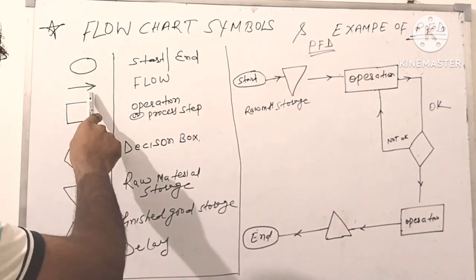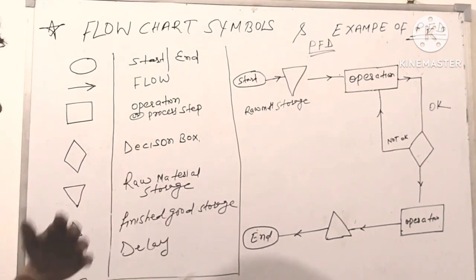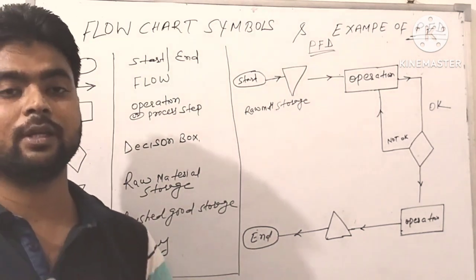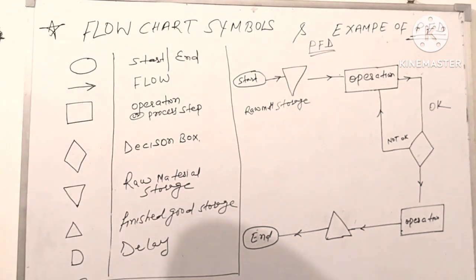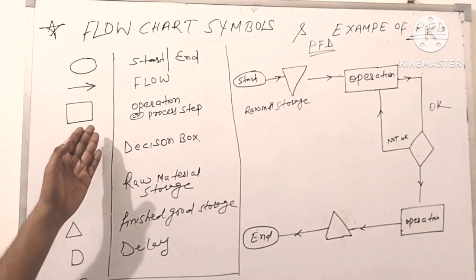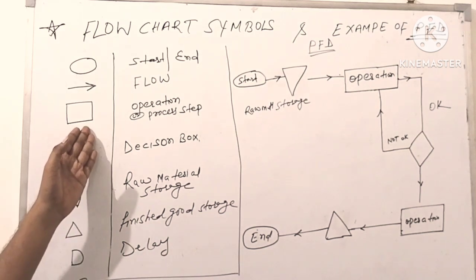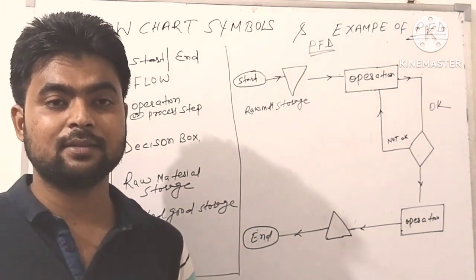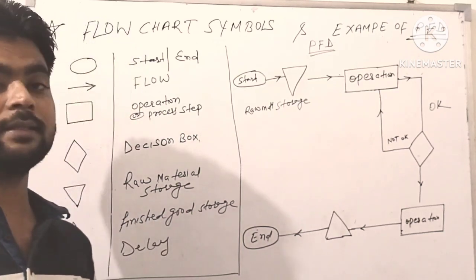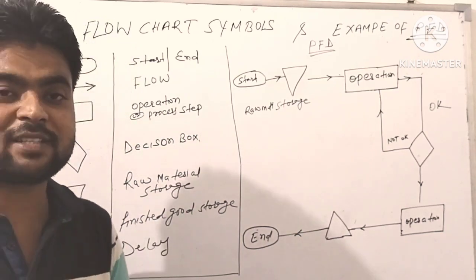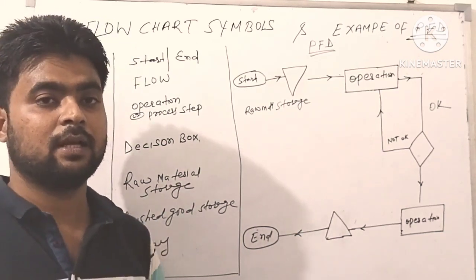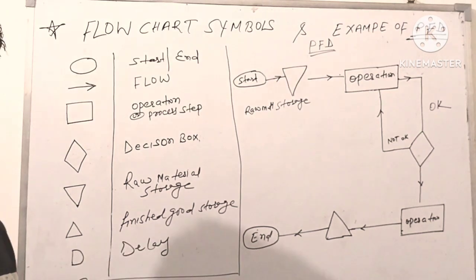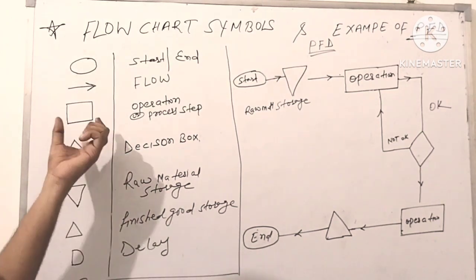You can see here an arrow — the arrow indicates the process is flowing. And the third symbol is a rectangle, which means an operation is going on; this is also called the process step. Whenever an operation is going on, you can use this symbol.